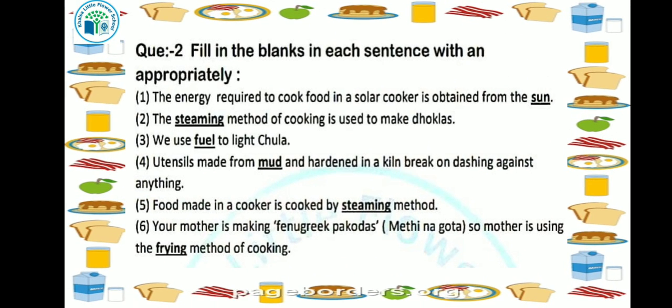Our next topic is fill in the blanks. First: the energy required to cook food in a solar cooker is obtained from the dash. The energy we need to cook food in a solar cooker comes from the sun. It is because of the sun's heat that food cooks inside the solar cooker.